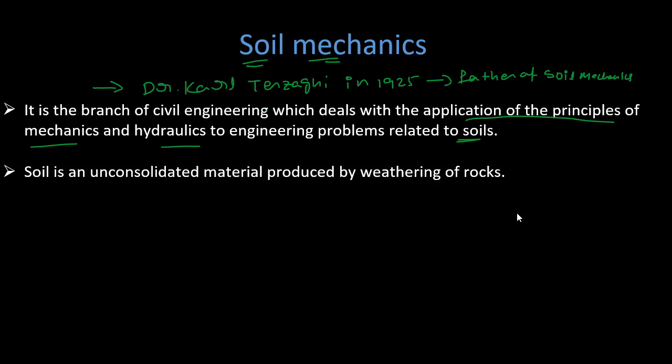But what is soil? Soil is an unconsolidated material produced by weathering of rocks. Unconsolidated means loose. So soil is a loose material produced by weathering of rocks. So here is a new term weathering. What is weathering?